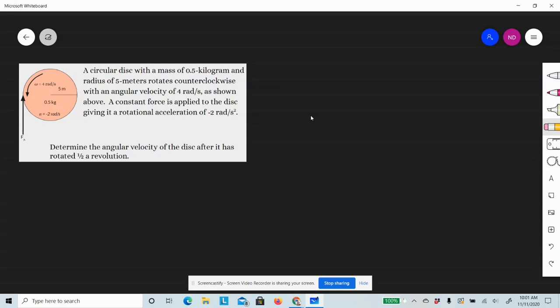Alright, here's the second example for rotational motion. The problem reads: a circular disk with a mass of 0.5 kilograms and radius of 5 meters rotates counterclockwise with an initial angular velocity of 4 radians per second.